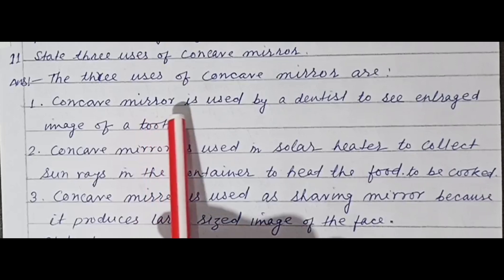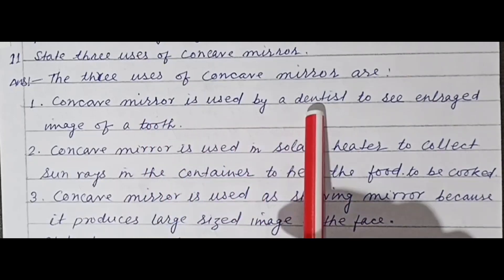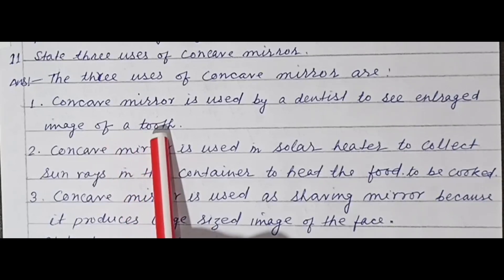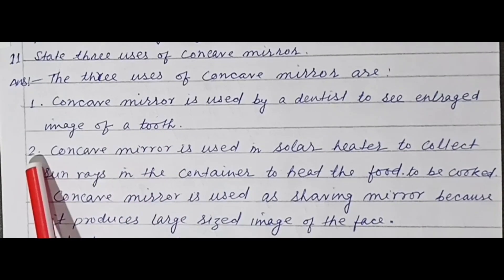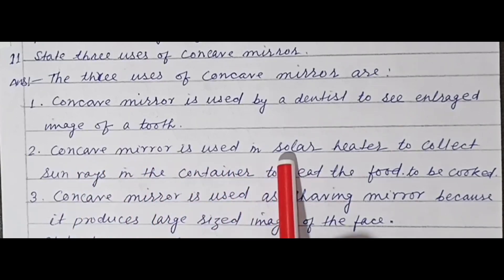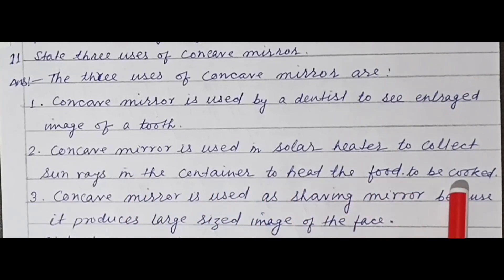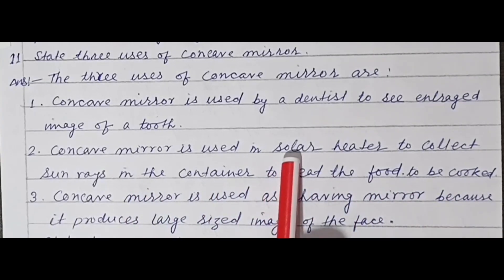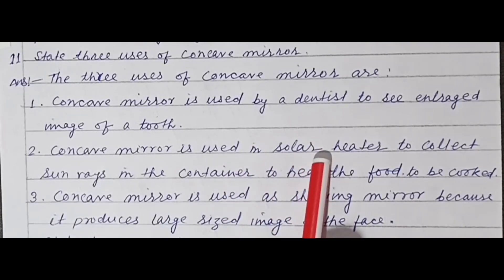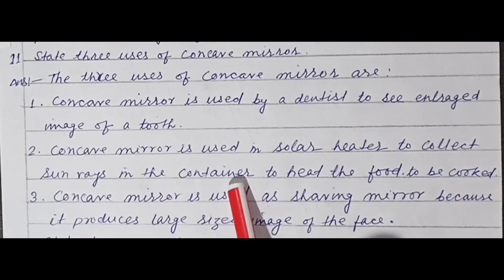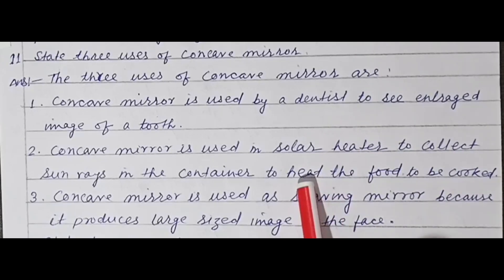Concave mirror is used in a solar heater to collect sun rays in the container to heat the food to be cooked. Children, solar cooker में heat collect करने के लिए concave mirror का use किया जाता है, ताकि जिस food को cook करना है, उसे maximum heat मिल सके।